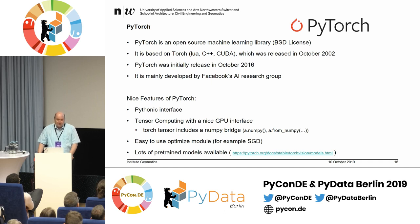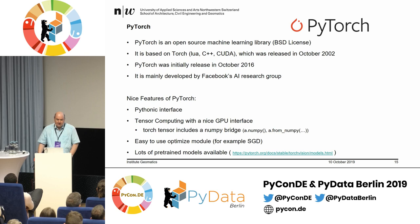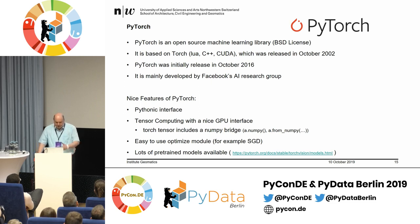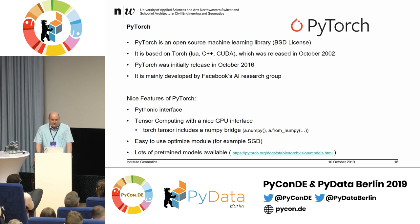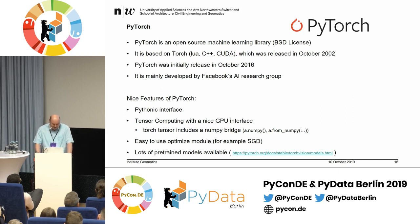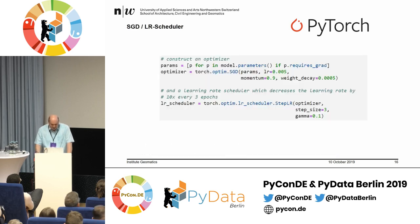The nice features of PyTorch are its really Pythonic interface. It uses its own tensors but you can convert to/from NumPy. I personally like the optimization module — for example, SGD has a really nice interface. In a few lines of code, you can already start with deep learning. There are lots of pre-trained models available inside. This just shows the SGD and the learning rate schedule — just two lines of code, basically. That's really nice.